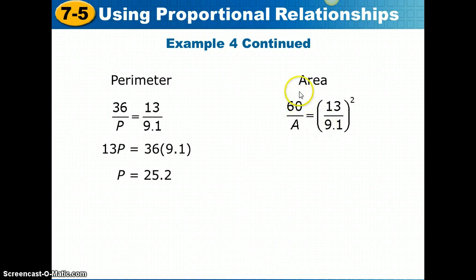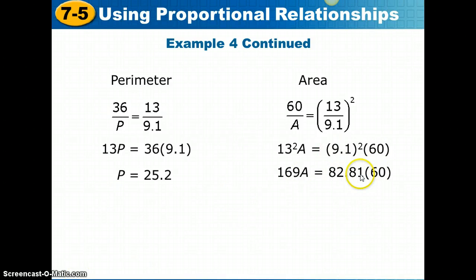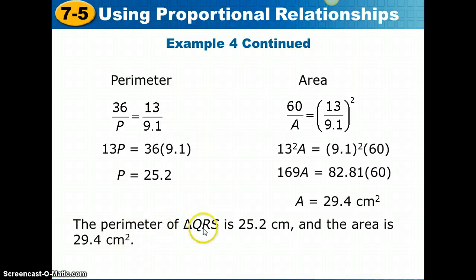Now let's find the area. We're going to use 60 as the given area of the first triangle over our unknown area A of the second triangle. We're going to set that equal to the area ratio. 13 over 9.1 all squared. Which means we're going to square 13 and 9.1 separately before we cross multiply. When we do that, we get 13 squared times that area equals 9.1 squared times 60. If I go ahead and square these two numbers first, 169A equals 82.81 times 60. We're going to multiply these two, then divide by 169 and find out that our area is 29.4 square centimeters. The perimeter is just measured in centimeters. So the perimeter of triangle QRS is 25.2 centimeters, and the area is 29.4 square centimeters.